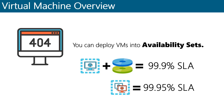What an availability set does is ensure that the VMs within it are distributed across multiple fault domains in the Azure data centers. It also ensures that they're deployed onto hosts within different maintenance windows. By deploying at least two VMs within an availability set, you can ensure that at least one VM is always running. Deploying your application across all VMs within the availability set ensures the app is always available.